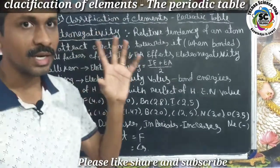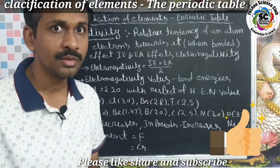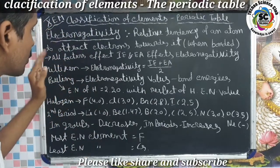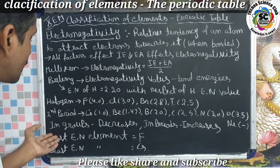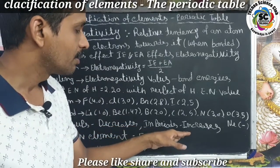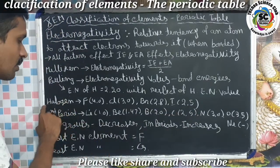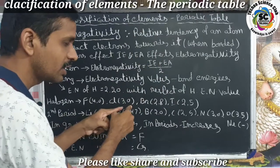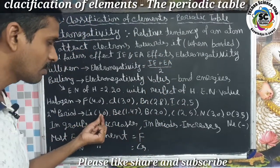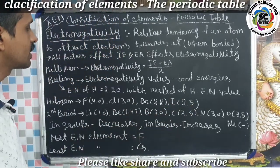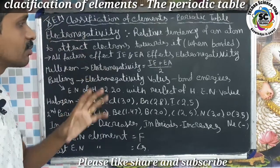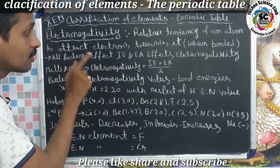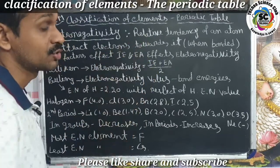So today in class we learned about what is electronegativity — the fourth or fifth property in properties of elements. Electronegativity decreases in groups and increases in periods. For example in halogens: fluorine, chlorine, bromine, iodine — values decrease as 4.0, 3.0, 2.8, 2.5. In the second period, values increase from 1.0 to 1.47 and so on.